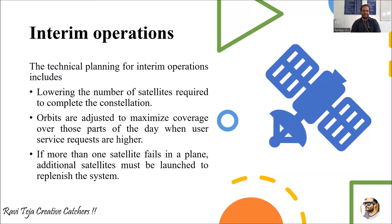In interim operations, orbits are adjusted to maximize coverage over parts of the day when user service requests are higher. By placing a satellite at the GEO orbit, you can cover a maximum area of the Earth whenever user service requests are very high. However, if more than one satellite fails, an additional satellite must be launched to replace the system.